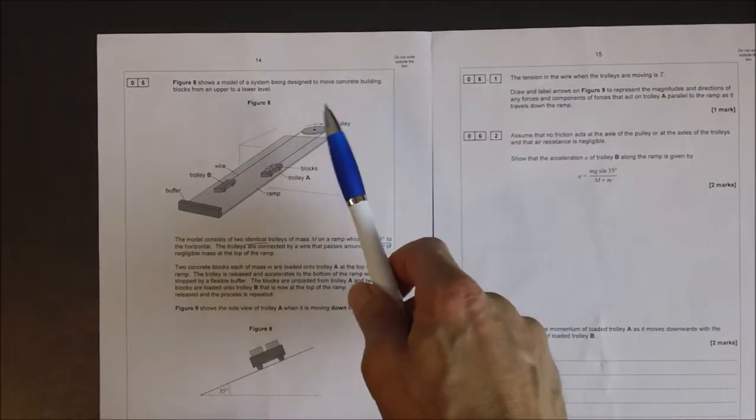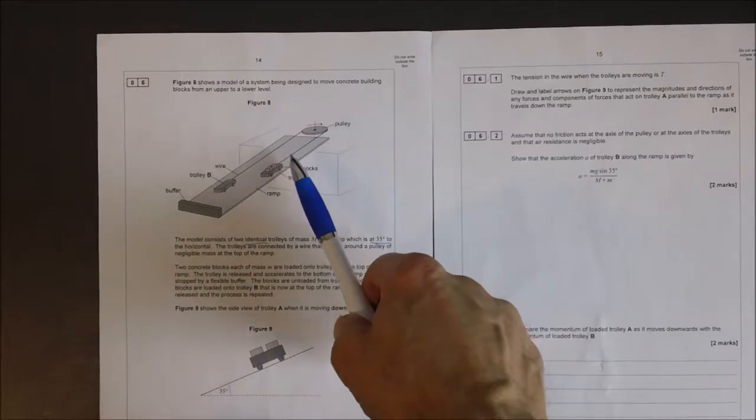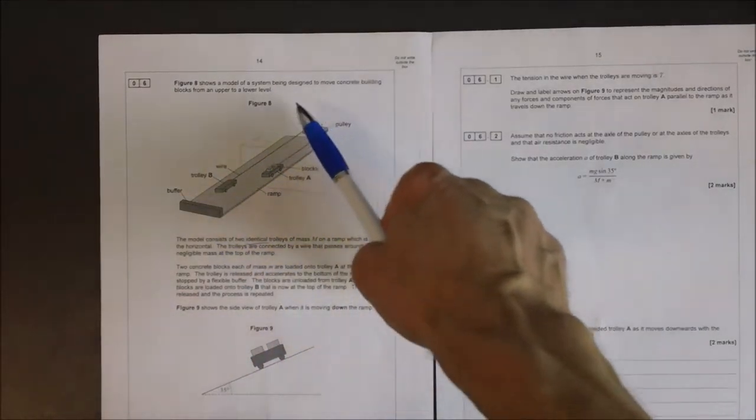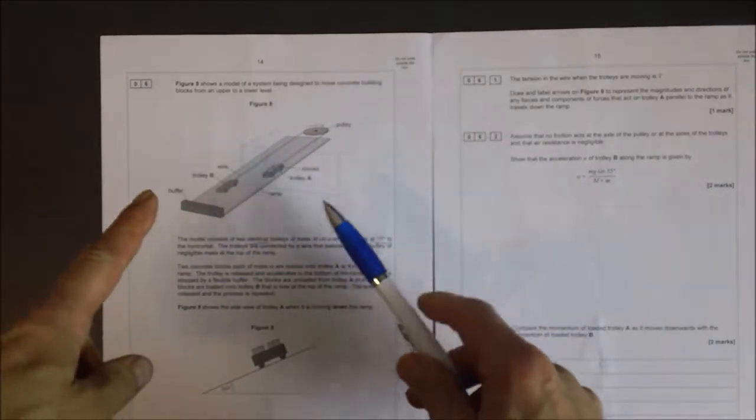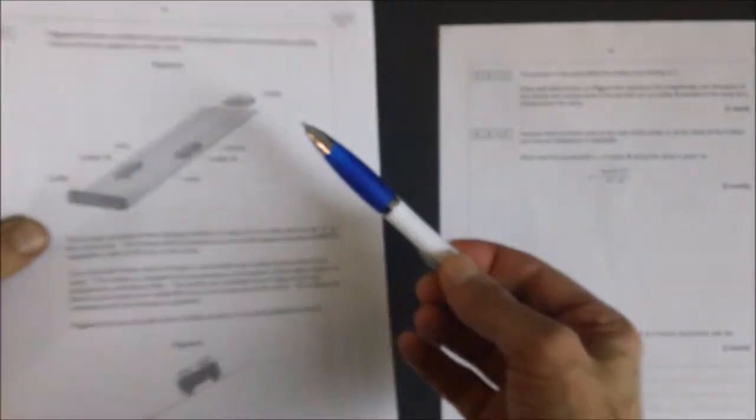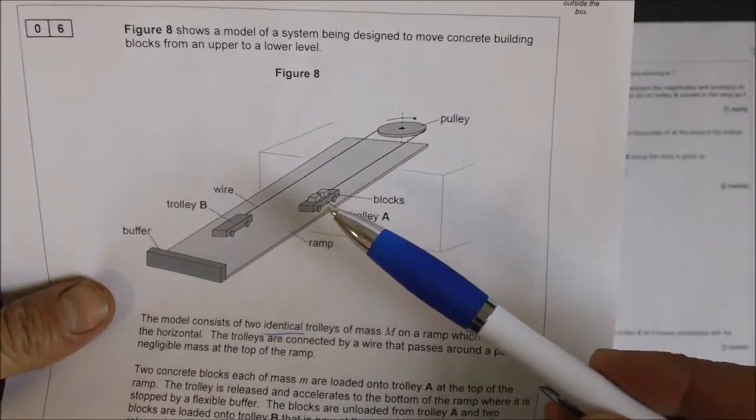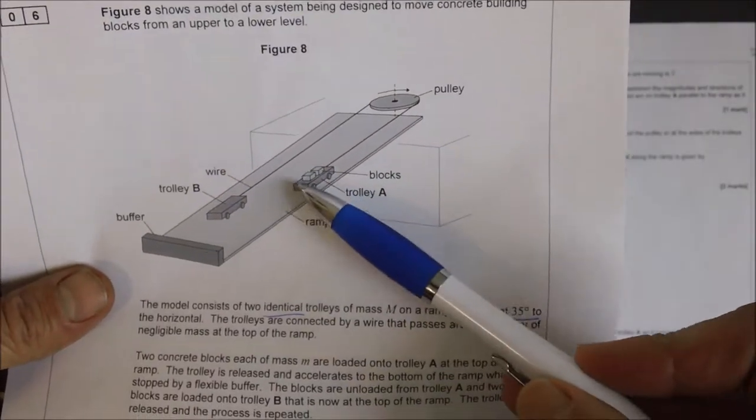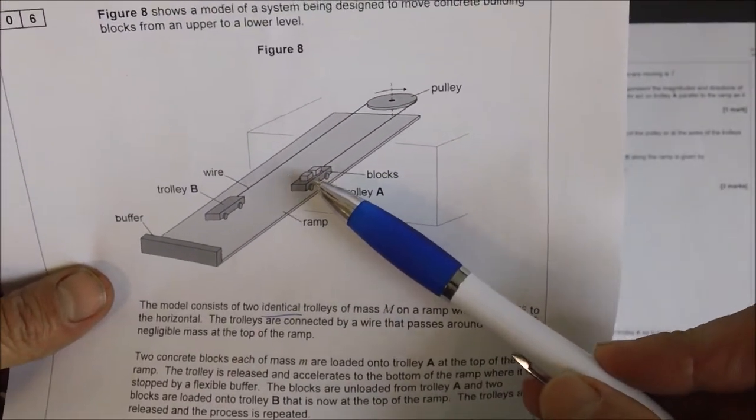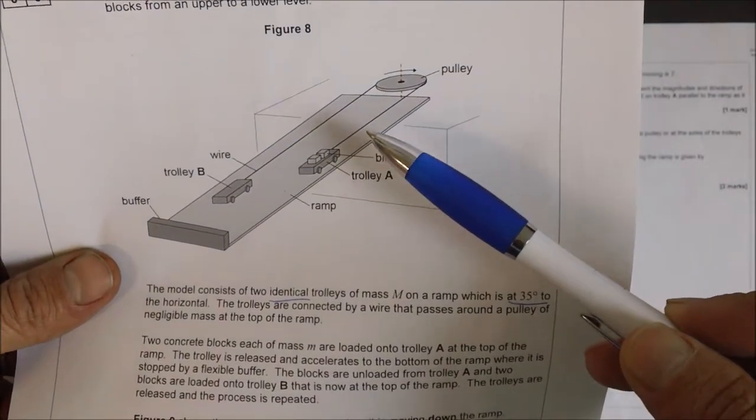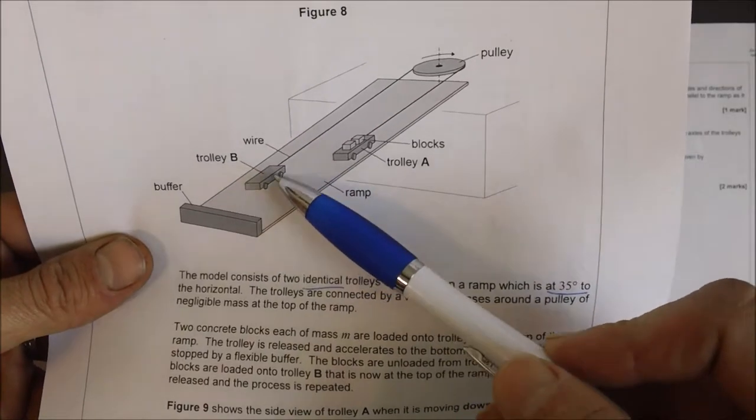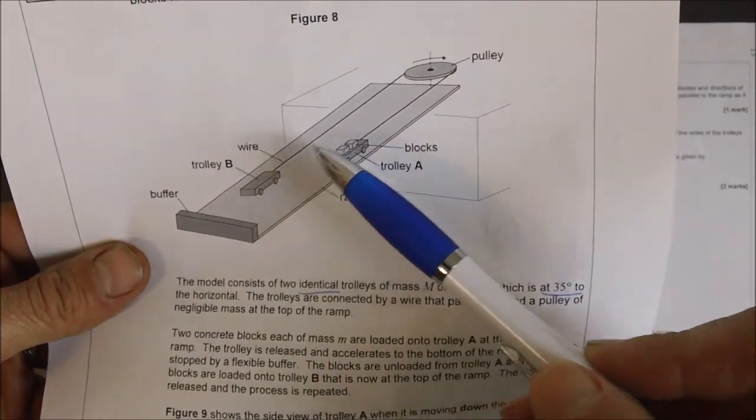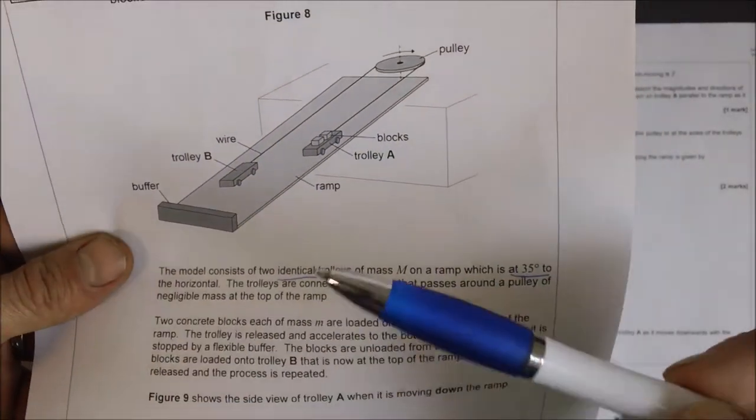It's not. F equals ma relates to the total mass of the system and the resultant force of the system. In this situation here, you can see you've got one trolley here with a larger mass and a larger weight force, which is accelerating it down the slope. And here we've got a smaller mass, but we need to include the mass of the whole system when we're using F equals ma.